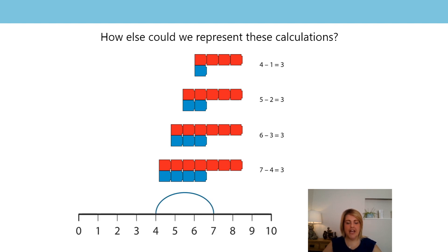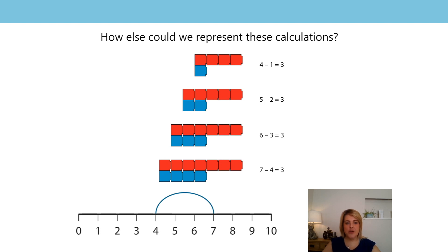We've got a number line zero to ten and marked on there is seven and four. Could you write the calculation that is being shown by this number line? Pause the video and have a go. Seven subtract four equals three — that was what this number line was showing. Now why don't you pause the video and see if you can draw a number line for all the other calculations: four subtract one is three, five subtract two is three, and six subtract three is three.